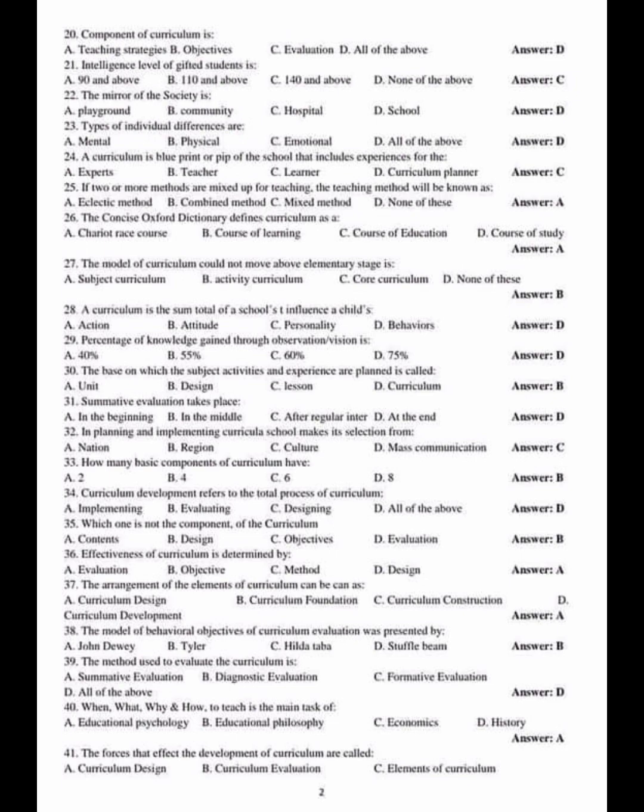Next: The intelligence level of gifted students is — A. 90 and above, B. 110 and above, C. 140 and above, D. None of the above. Correct answer: C. 140 and above.